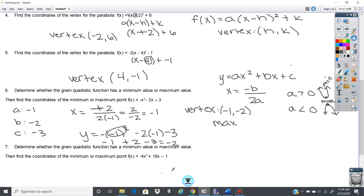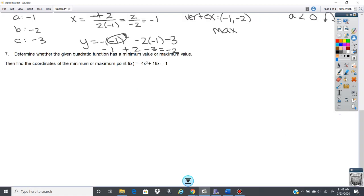Let's do this last one here. So we have an a value of -4, a b of 16, a c of -1. So I'm going to go x equals -16 over 2 times (-4). So -16 over -8 gives you a positive 2.